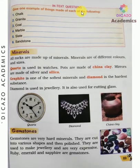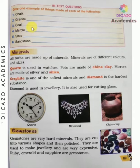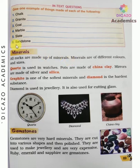Now the in-text question: give one example of things made up of each of the following. Chalk is a soft rock. Granite is a hard rock used for making floors. Coal is a soft rock used for heating. Marble is a hard rock used to make buildings and flooring. Slate is a soft rock used to make slates or blackboards. Sandstone is used to make the Red Fort.